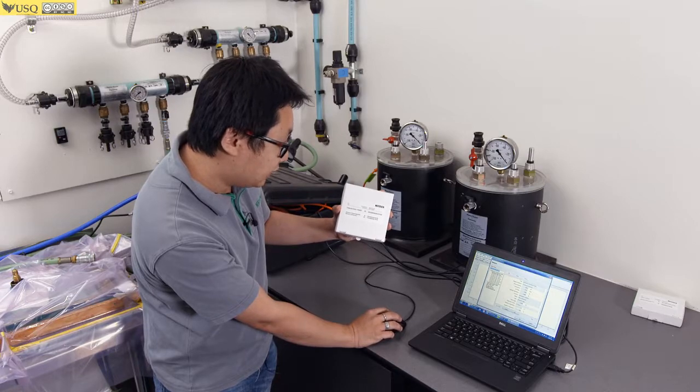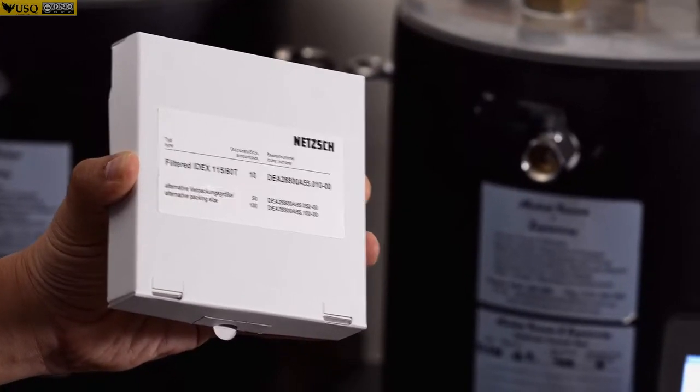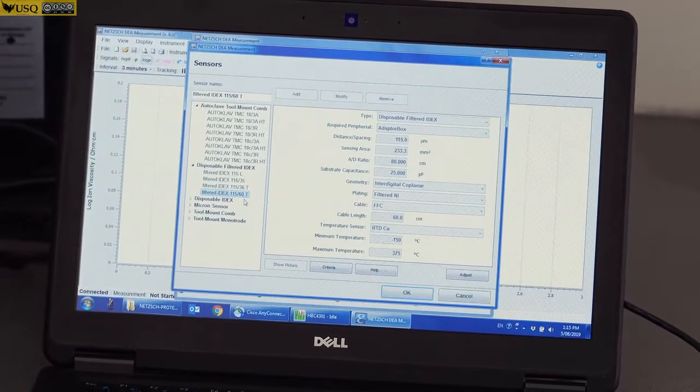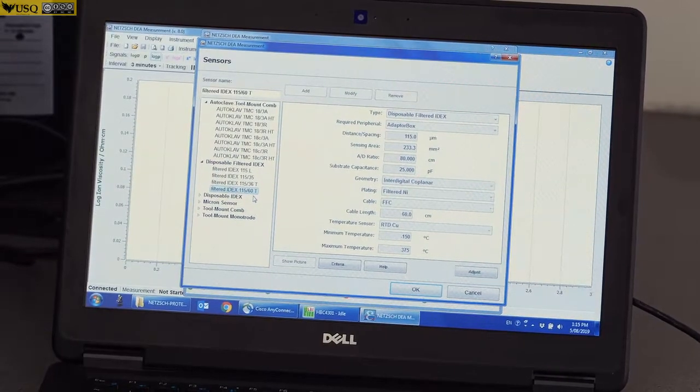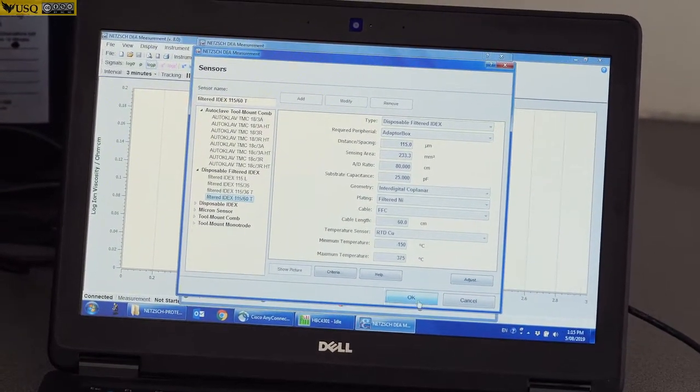Now, we can select disposable filter IDX and filter IDX 115-60T. Choose the sensor and click OK.